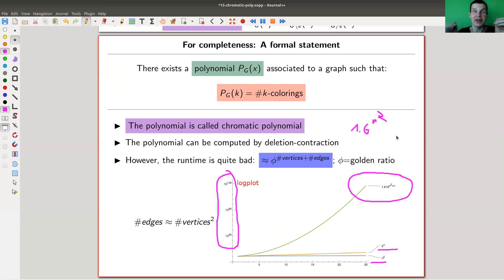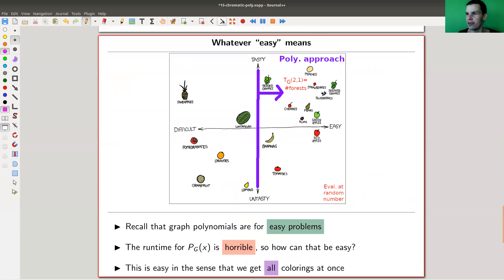It's absolutely great statement. There's one polynomial. The polynomial tells you all colorings at once, but computing it is a bit, it looks innocent, but it's a bit difficult. Kind of there's some complexity involved. You can't somehow get rid of all the complexity.